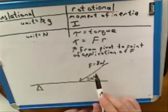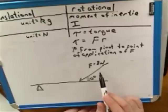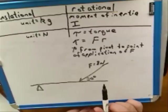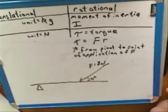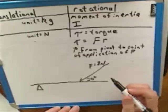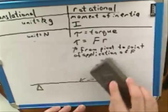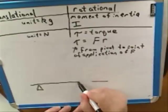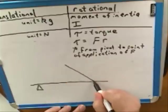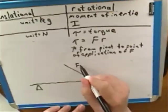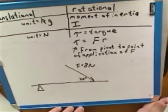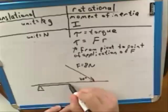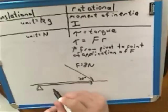Now suppose we're dealing with a force that is not parallel or perpendicular to the object — it's at a slant. So it's going to be more difficult to figure out what the torque is from this force. I'm going to go ahead and draw in our R vector. The R vector starts at the pivot and goes to the point of application of the force.